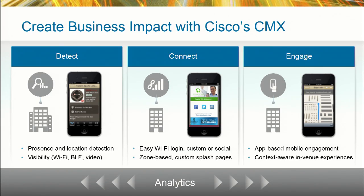What is CMX? CMX is Connected Mobile Experience — you could almost say it's indoor navigation, but it has a lot more to it. We break it up into three silos. First, we have the detect piece: we can detect people on entry, mostly through Wi-Fi, but we're also adding BLE and video as detection capabilities. Then we have what we call connect — basically our guest access, which is custom-made or social through Facebook. We have an exclusive agreement with Facebook for guest access, so users can come in and do a check-in through Facebook.